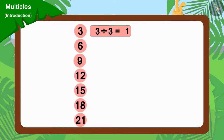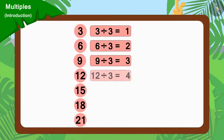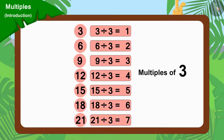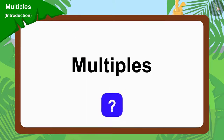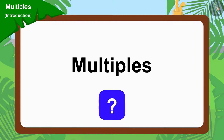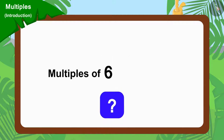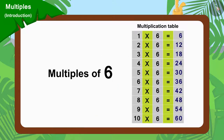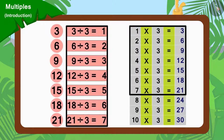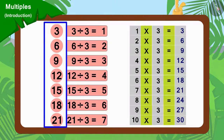Because all these numbers can be divided by 3, these numbers are multiples of 3. We can find the multiples of any number from its multiplication table. For example, if you look closely, you will find all these numbers in the multiplication table of 3.